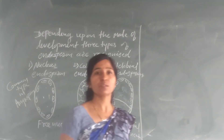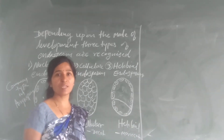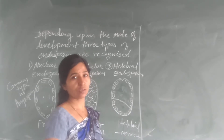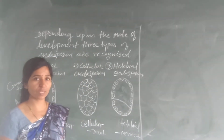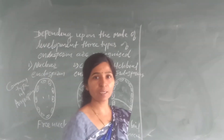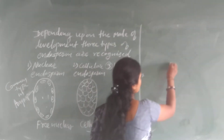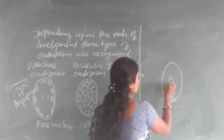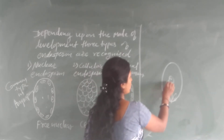Hello, my name is Post-Fertilization Changes. In this fertilization, we have to use the seed. In the seed, we have to use the embryo and we have to use the endosperm. We have the embryo sac, the egg, the synergid, and the secondary nucleus. One male gamete fuses with the secondary nucleus, and one male gamete fuses with the egg.